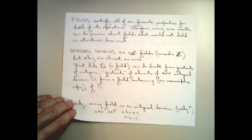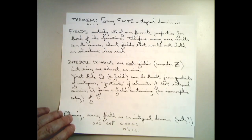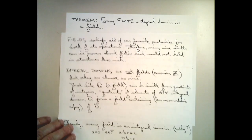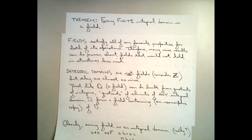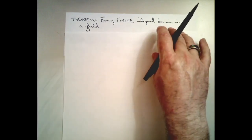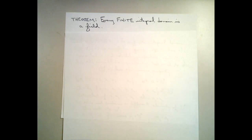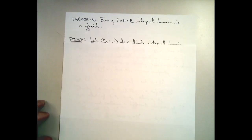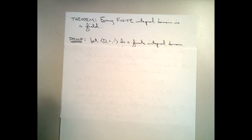As we pointed out with the integers, not every integral domain is a field. However, it turns out that if we just consider finite integral domains, those are fields. And that's a very interesting theorem — maybe a little bit surprising even — but let's go through a quick proof as to why that might be the case. So we're going to start with a finite integral domain D and eventually show it's a field.